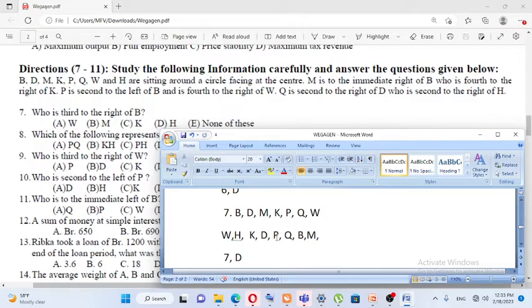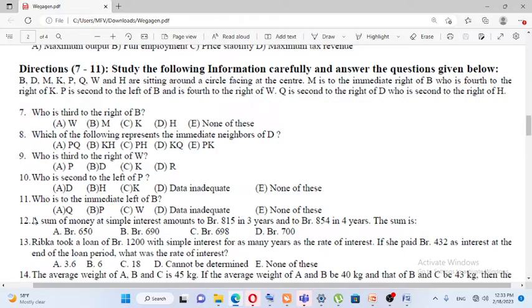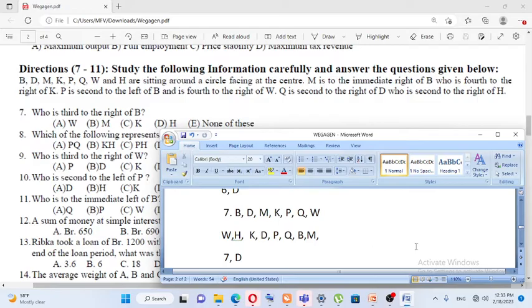Q is second to the right of D. Q is second, so the D is to the third to the right of B. So none of the above.